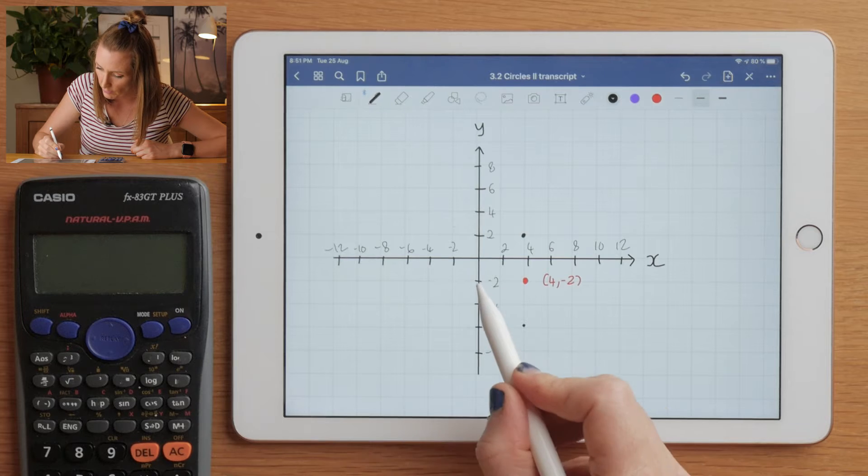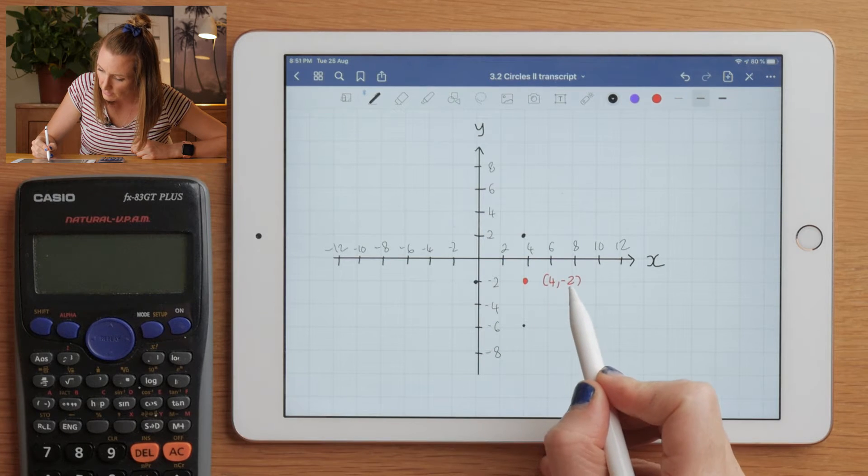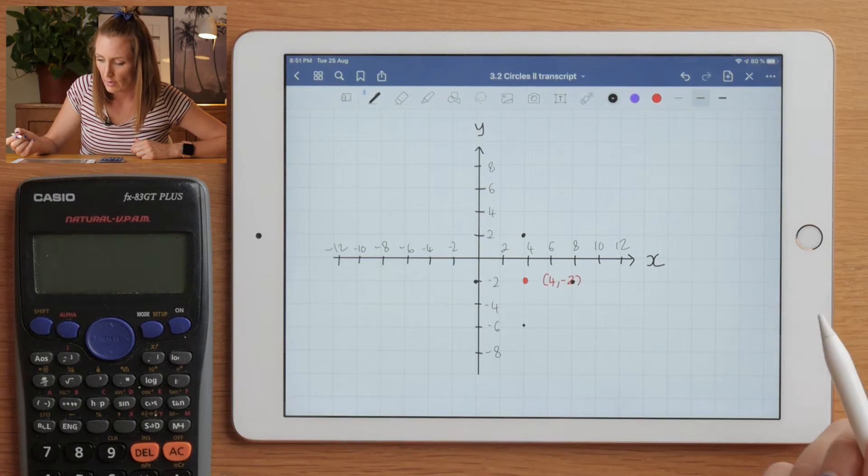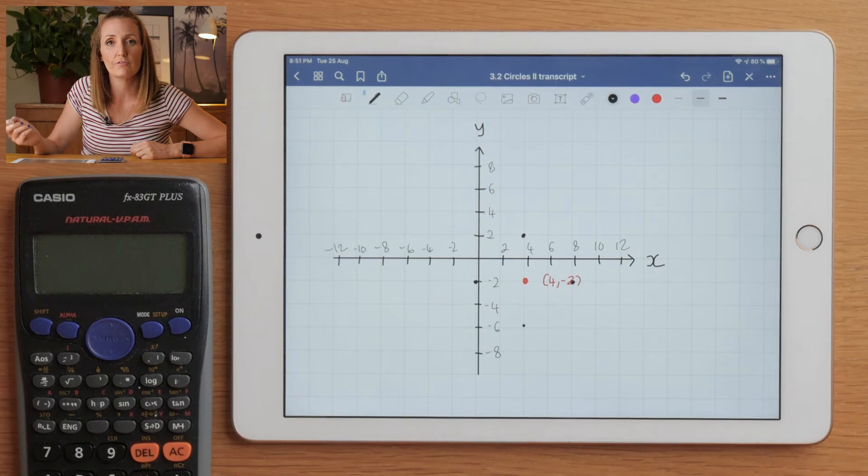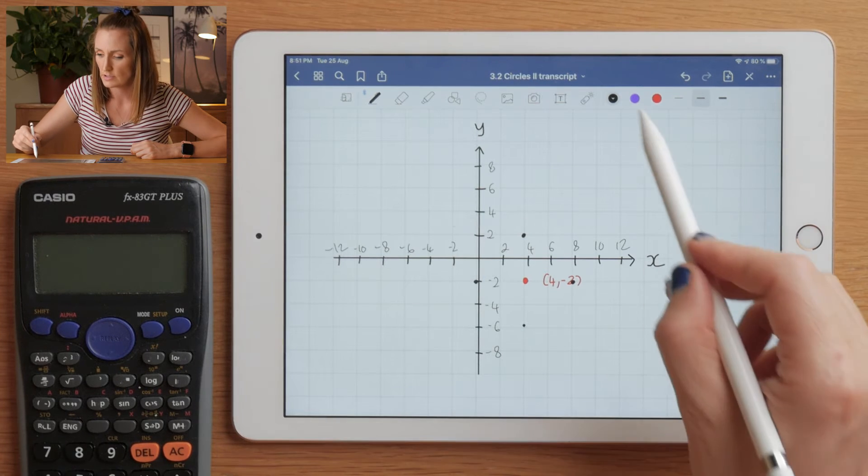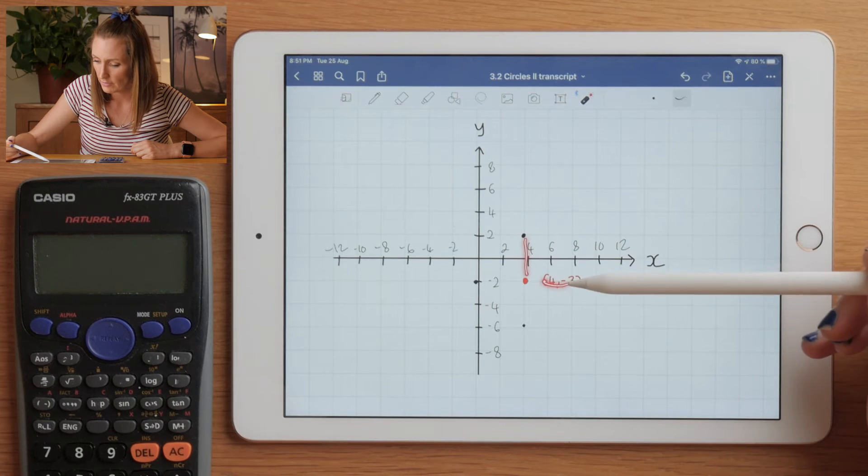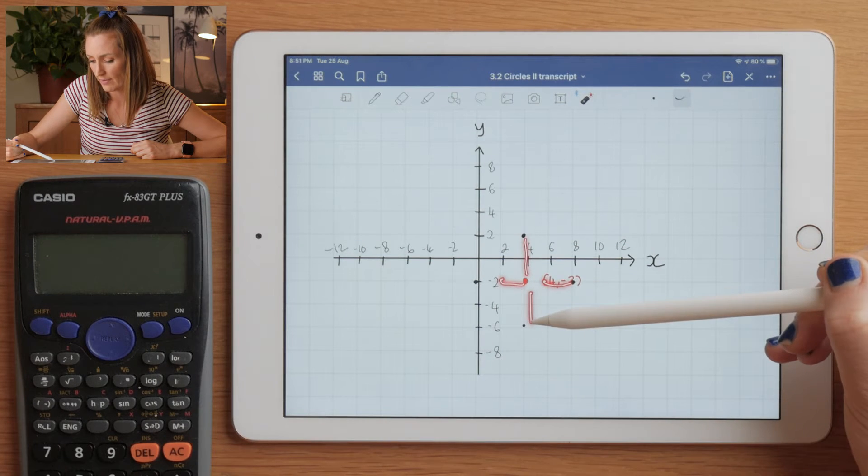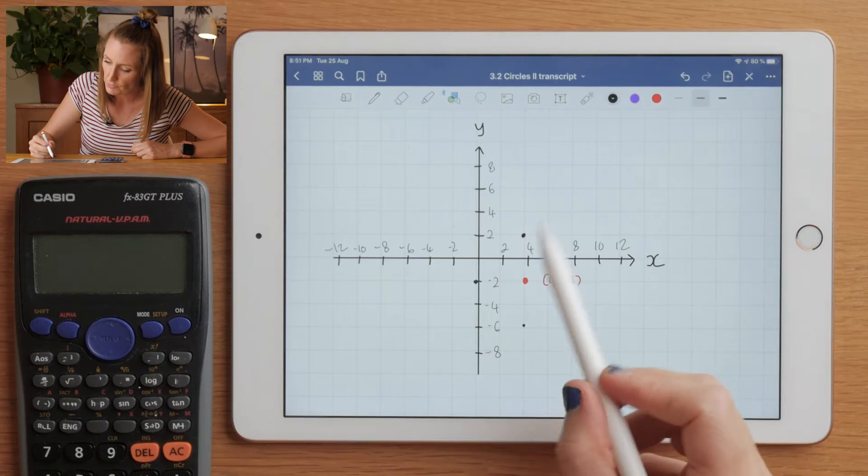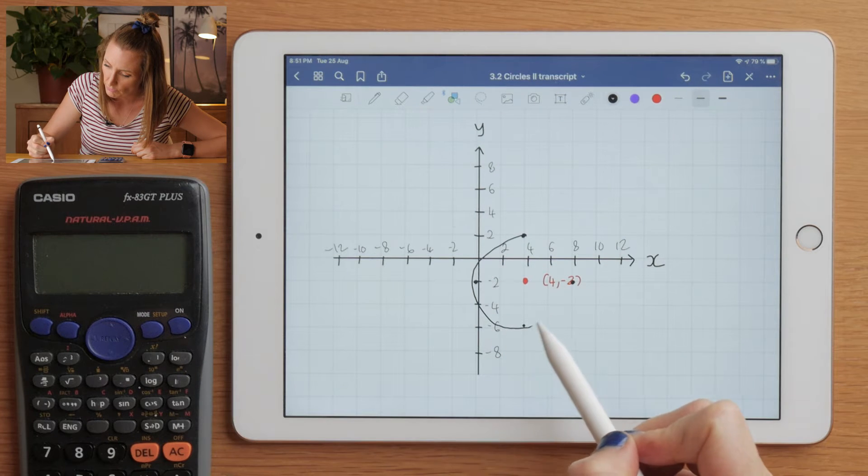below, to the left, and to the right. Now I'm always marking a distance of 4 away from my center because the radius is 4. So above, below, left, and right—and that just gives me four spots to join up to roughly join together to get my sketch.